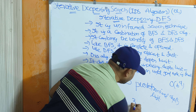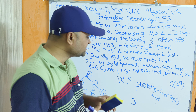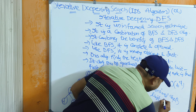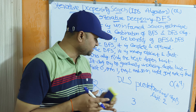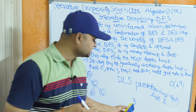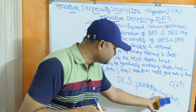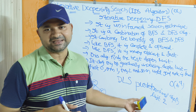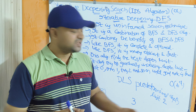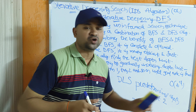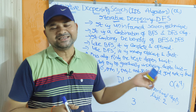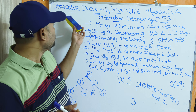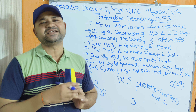For example, suppose the goal node is available at depth 3, whereas the predetermined depth limit is set as 2. Since the depth limit is less than the depth of the goal node, the search is incomplete and doesn't produce a solution. To overcome this problem, we use iterative deepening search algorithm.